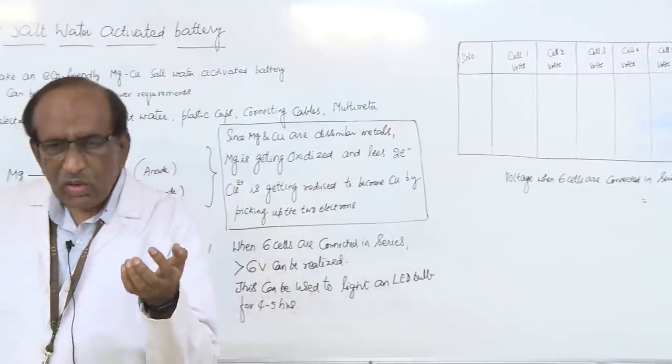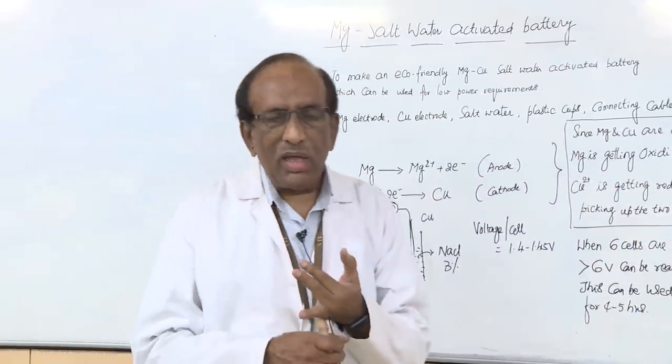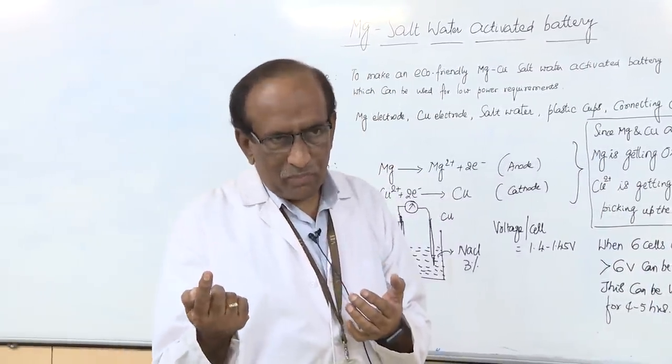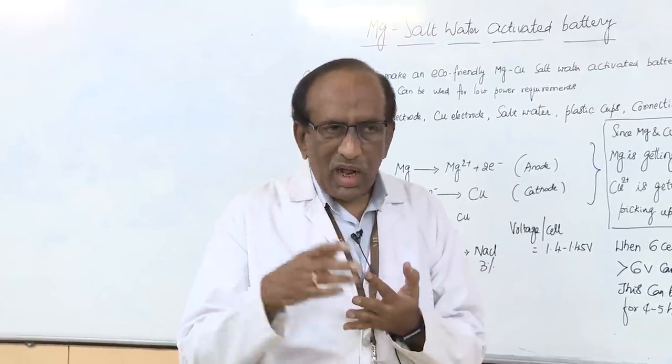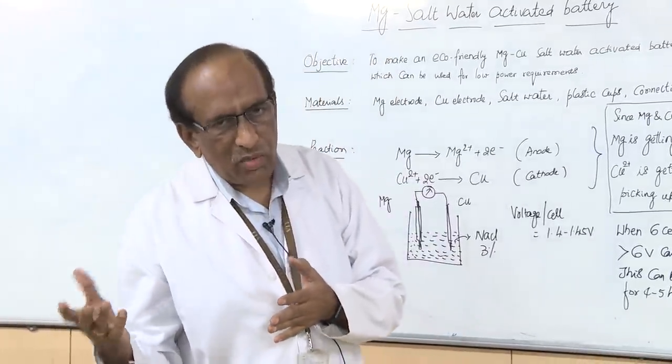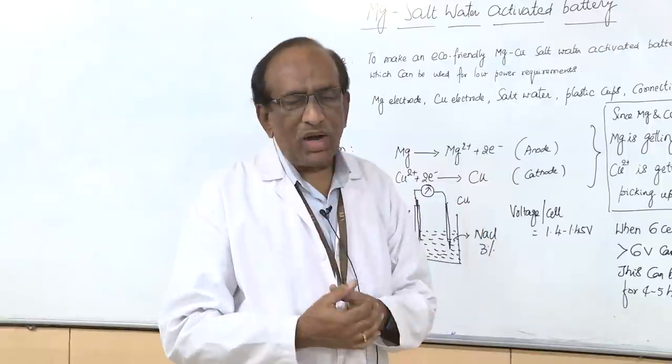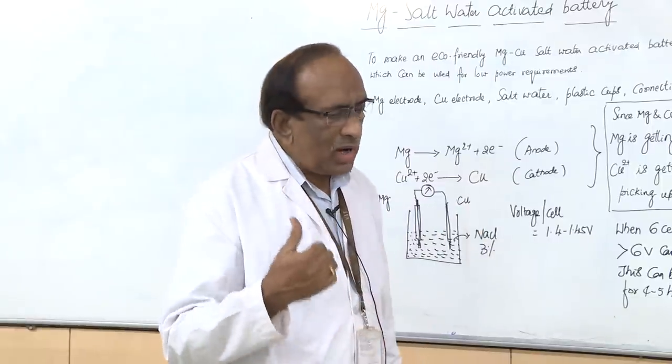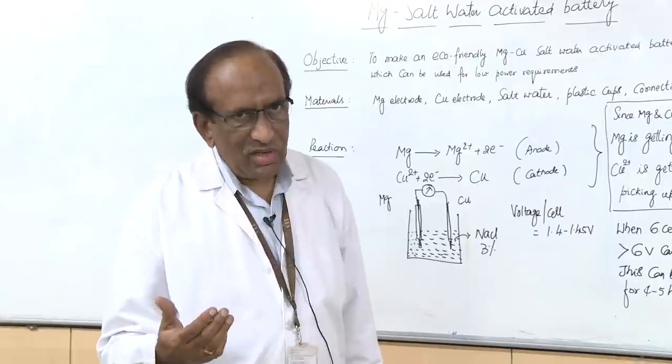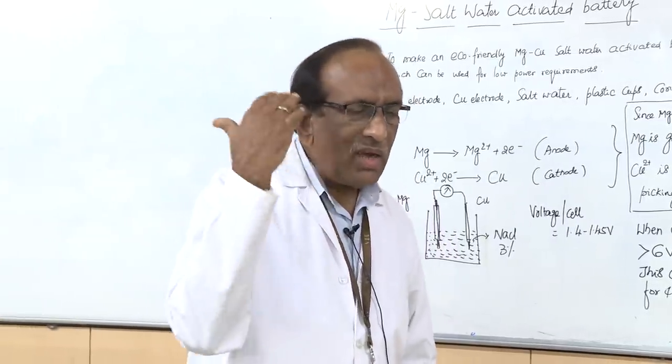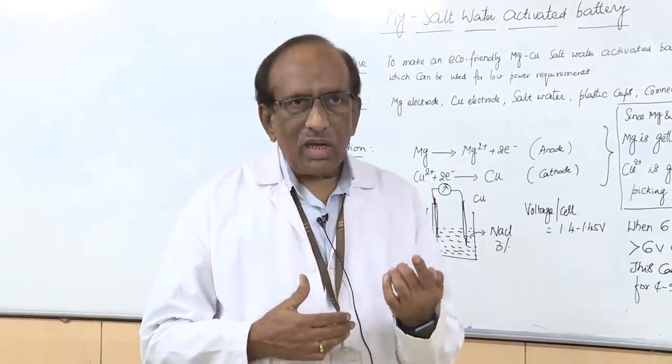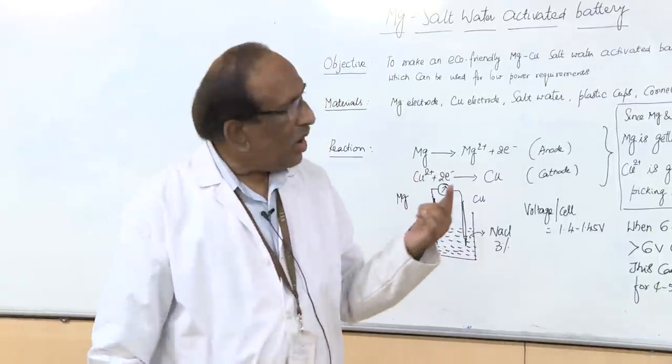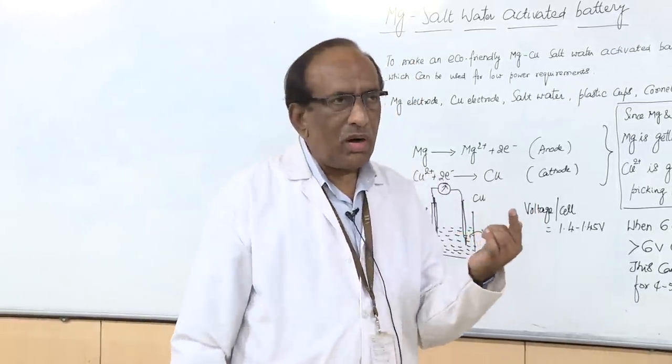If you want, you can do this experiment using jump clips or small nails, small nails which are long enough, and use copper or graphite as a counter electrode. Put them in salt water, you will get voltage there also. But the voltage with magnesium is the highest because it is very high on the oxidation side.